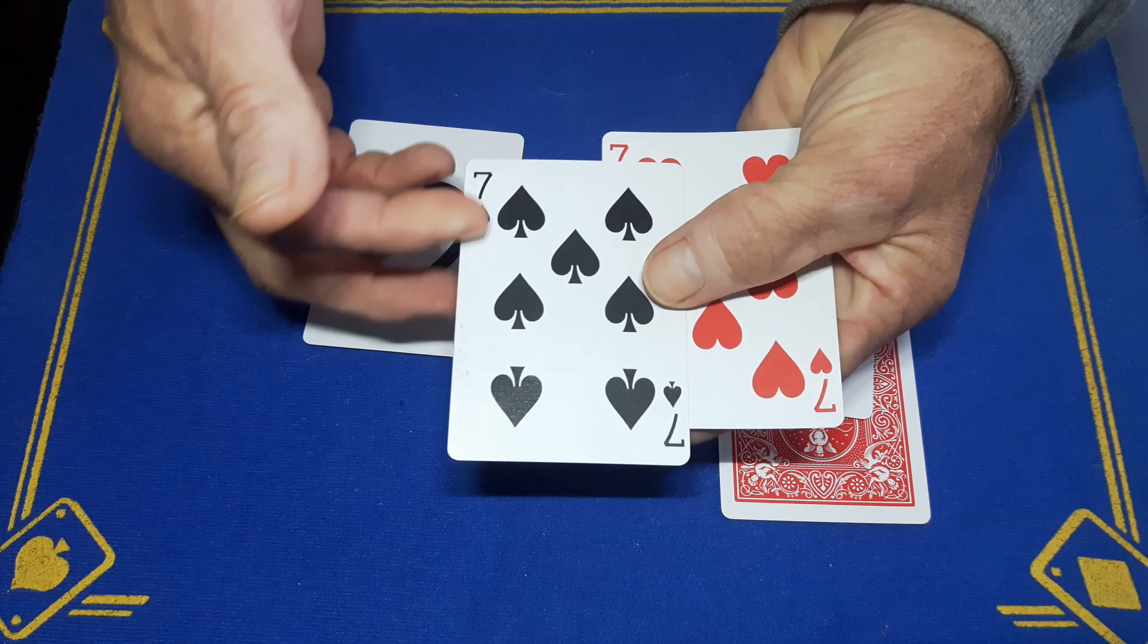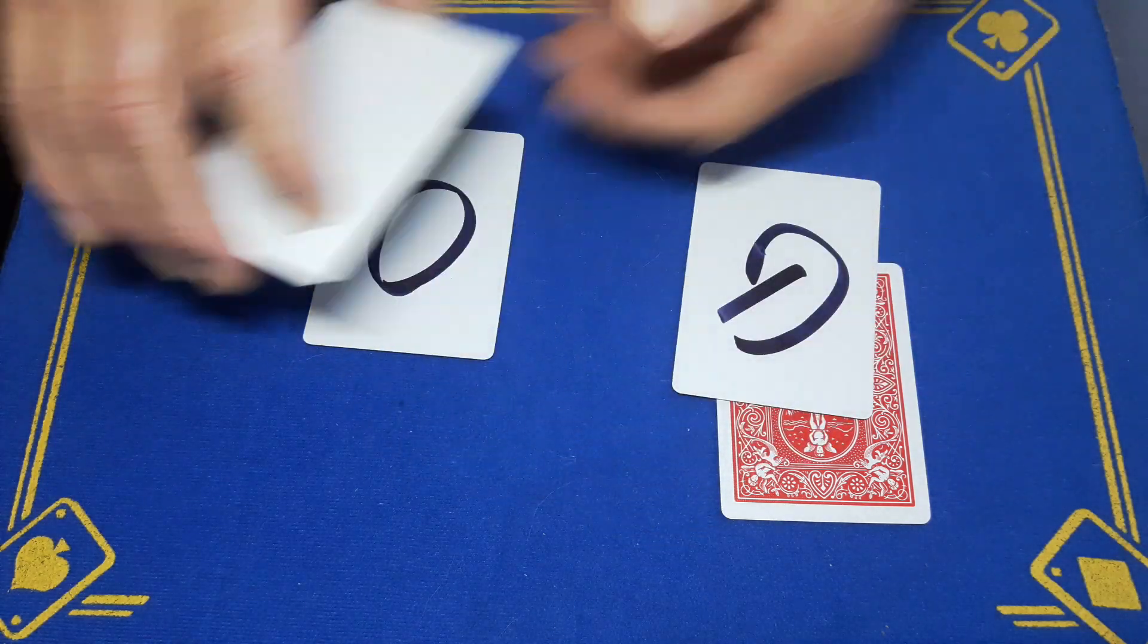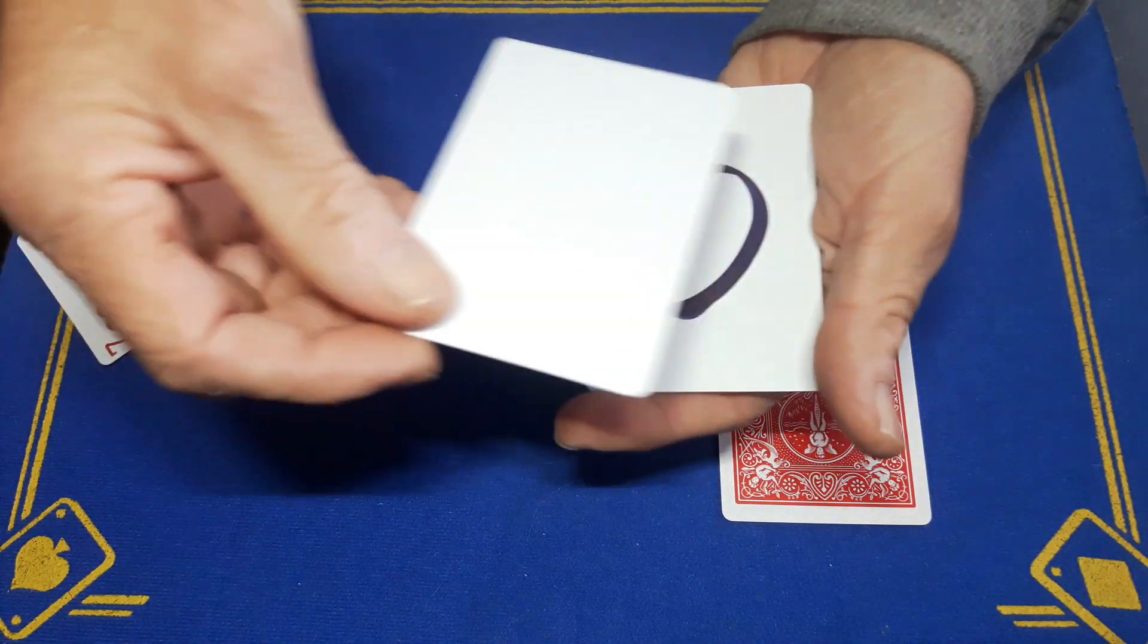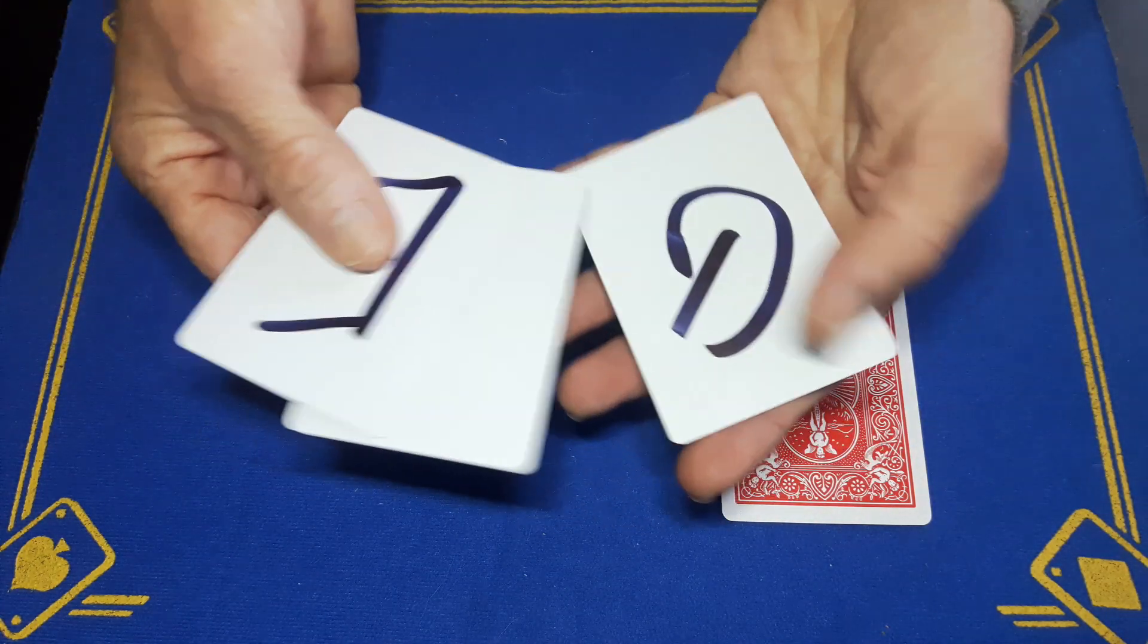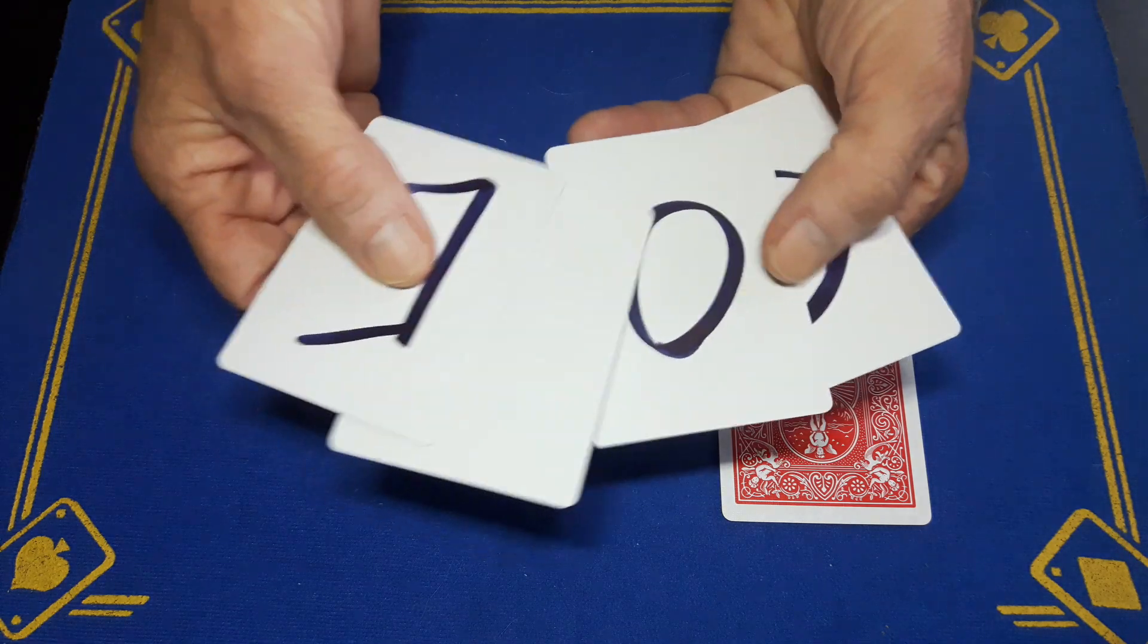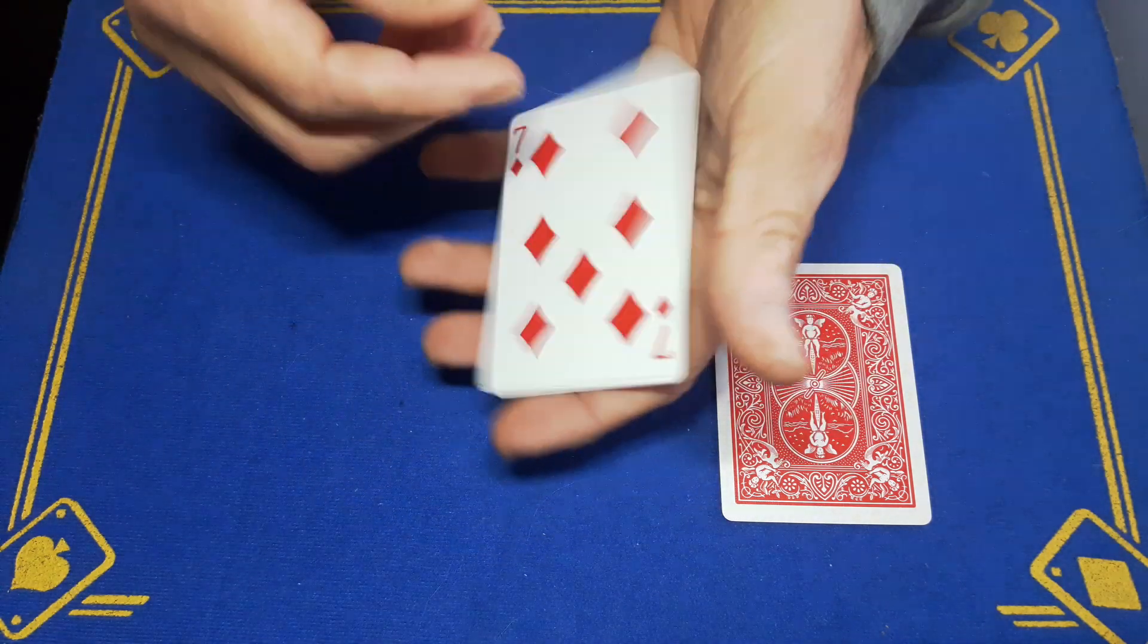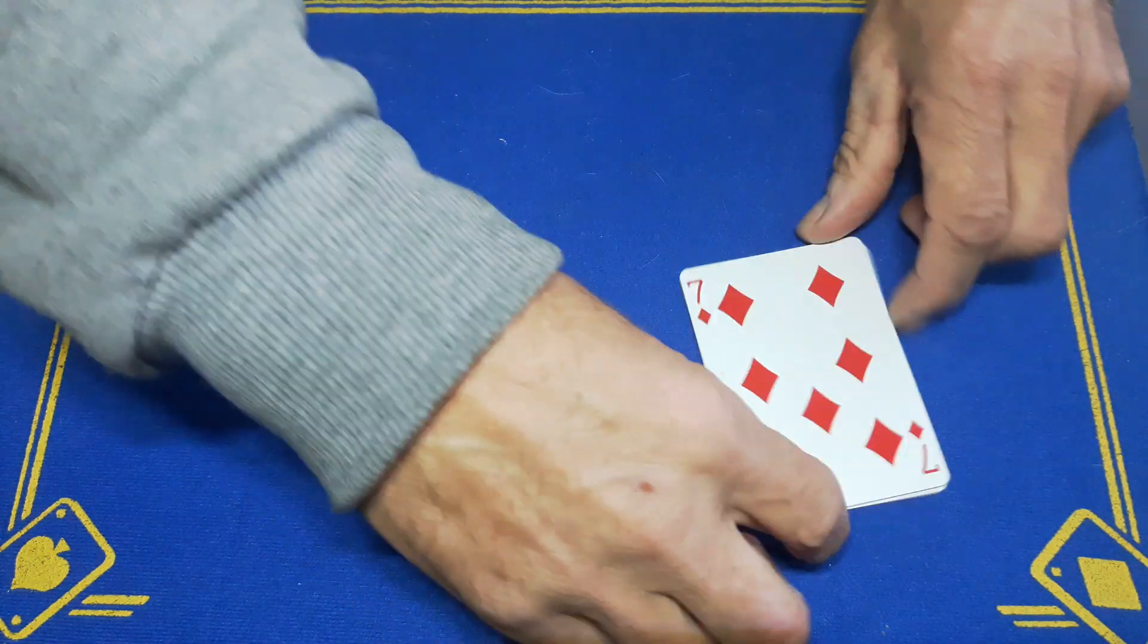So you're going to go G, O, the blank, and then the E like this. So G, O, blank, E. Turn all these over and drop that on top of this card.